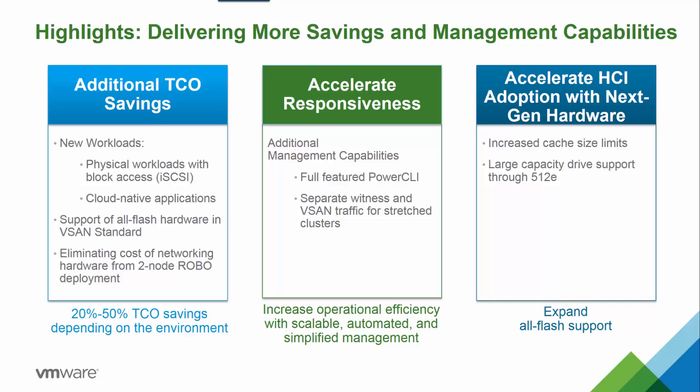With Virtual SAN 6.5, we offer additional total cost of ownership, or TCO savings, by offering new workload types such as cloud-native apps and the ability for physical workloads to point to the vSAN datastore via iSCSI communication. Support of all-flash hardware in the Virtual SAN standard edition, while eliminating the cost of networking hardware for two-node robo deployments. We can accelerate responsiveness of the business by providing a full-featured PowerCLI tool to fully automate daily operational tasks, and separating the witness and Virtual SAN traffic for stretched clusters. We've accelerated the adoption of HCI with support for next-gen hardware by increasing cache sizing limits and supporting larger capacity drives through the 512e drives.